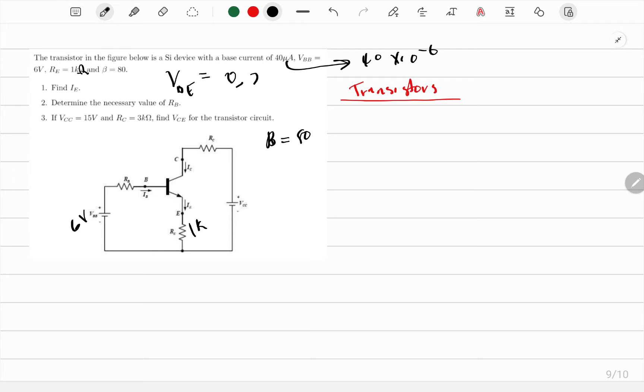Let's solve the problem. Find current IE. We know current IE is equal to current IB multiplied by the gain, so 40 times 10 to the negative 6 multiplied by 80. I checked my calculator and I made a mistake here. The formula is supposed to have IC.